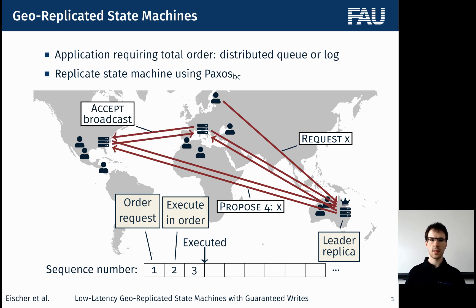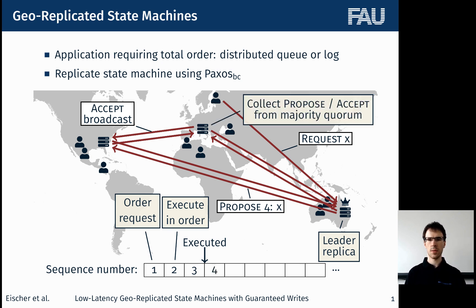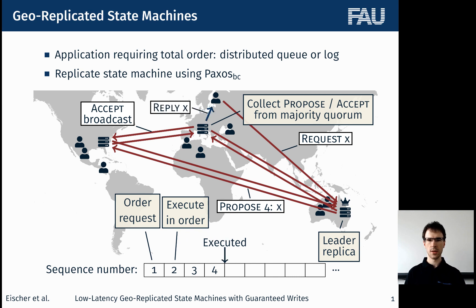The other replicas then accept that proposal and broadcast the accept message. Once a replica has collected propose and accept messages from a majority of replicas, it knows that the sequence number assignment is stable and can execute the request and send the reply back to the client.